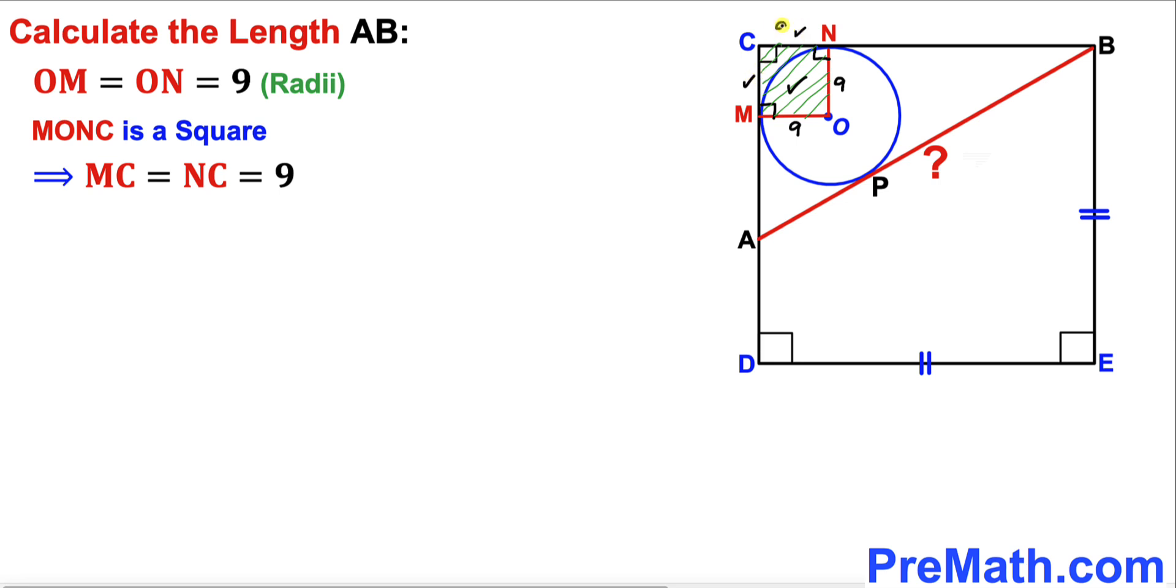Now let's observe one thing. We know that BC whole length is 45 units, and length CN is 9.